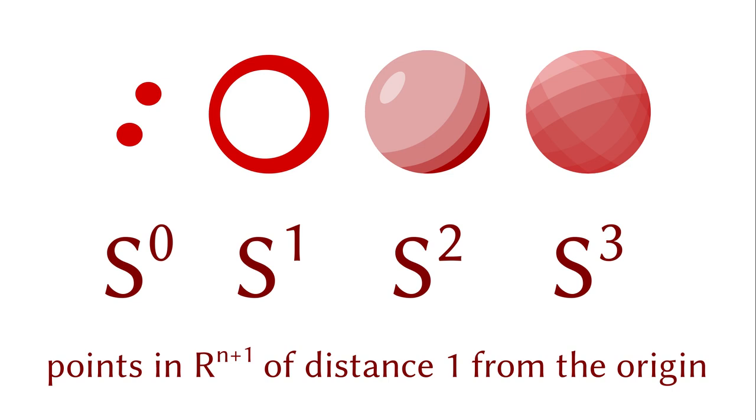Anyways, you might wonder why the standard S0 is the two points. Well, they are the points minus 1 and plus 1 on the real line.